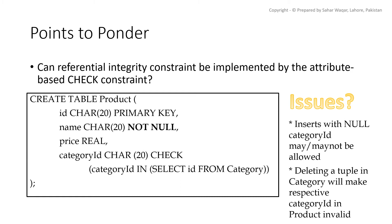If we insert any tuple in the product table with a null category, it may or may not be allowed. For example, if category_id in the category table is a NOT NULL attribute and you try to insert a null cid into the product table, it will be rejected. Also, if we delete a tuple from the category table, the CHECK constraint for cid in the product table will not be re-checked, and we may then have tuples with a cid not present in the category table, creating room for invalid data.